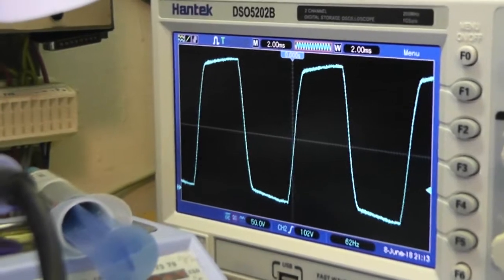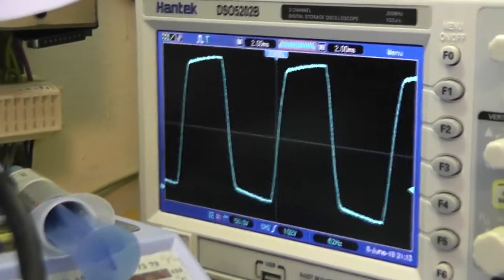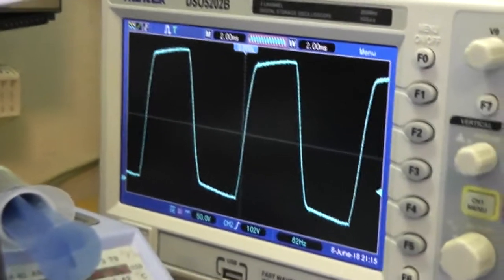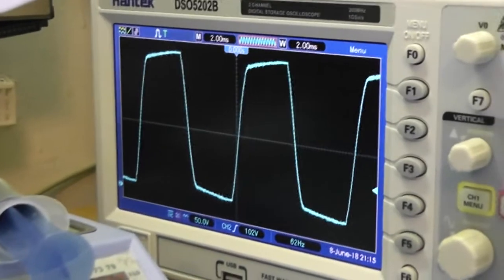When the load is disconnected, this is the waveform on the output. There is overvoltage because the amplitude is correct, but the effective value is wrong.